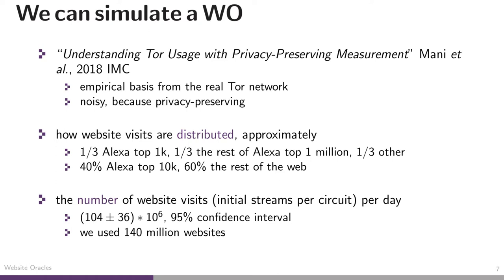We also learn from Mani et al. a quite good upper bound of the number of website visits per day through Tor, measured through the number of initial streams per circuit. They measured about 104 million website visits per day with a 95% confidence interval. We take the upper bound of this confidence interval and assume 140 million websites visited through Tor for a full day, and assume this is uniform. Because we now have the number of website visits and know how they are distributed, we can simulate the entire recipient website anonymity set, which gives us a way to simulate a website oracle, since all it does is query this anonymity set.